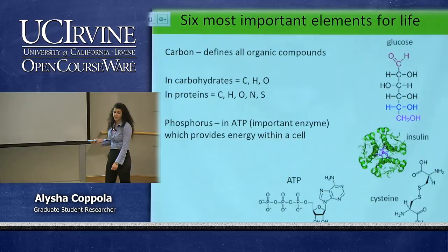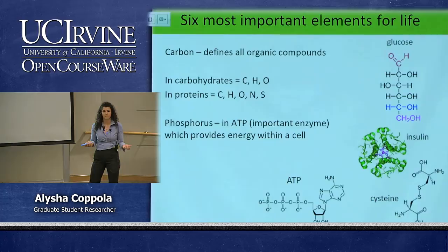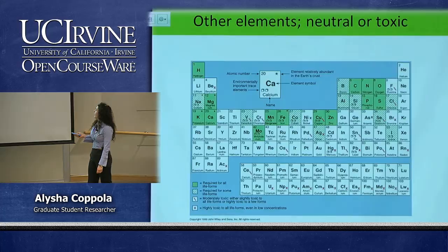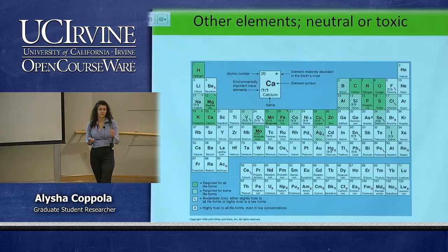Sulfur is important — as mentioned previously, at mid-ocean ridges you have hydrothermal vents and sulfur is a source of energy for those deep-sea ecosystems along the North Atlantic ridge. These other elements, shown in white on the periodic table, are neutral, needed in very small concentrations for some but not all life forms, or can even be toxic and detrimental to the organism.